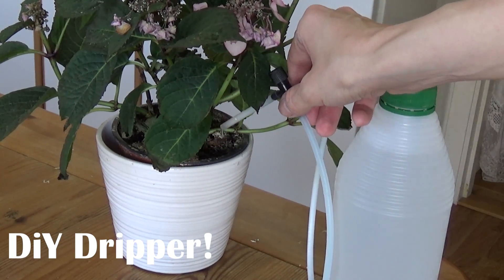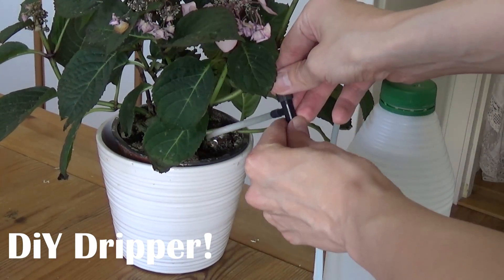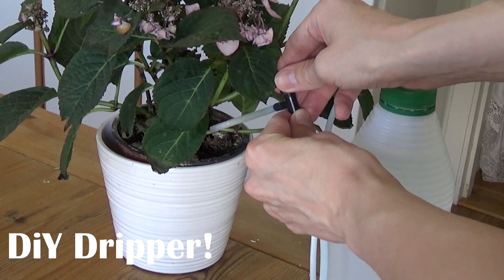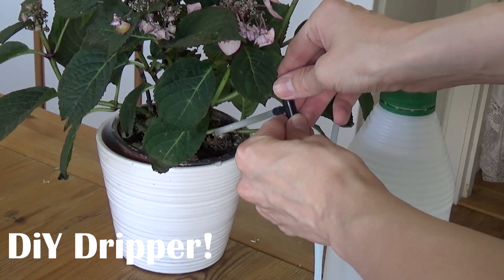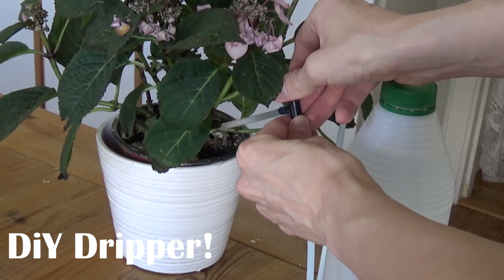Going on vacation and getting someone to water your plants can be a struggle sometimes. Making your own dripper will solve that. Just fill it up with water and adjust the drop speed and you're ready to leave.